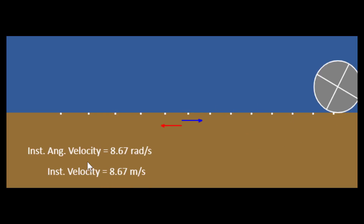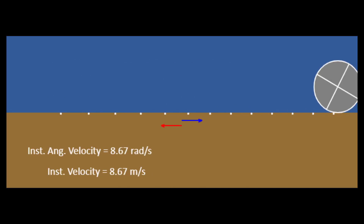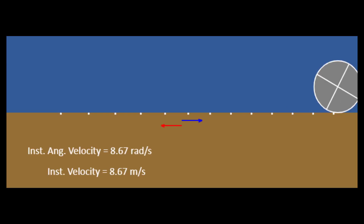Eventually you get this condition: the angular velocity and linear velocity are numerically equal. The blue vector represents the translational velocity of the bottommost point of the object, and the red vector represents the linear velocity due to rotation of the bottommost point. When they are equal, the velocity of the bottommost point is zero and the body is rolling without slipping. Friction acts against motion — that is, to the left — and then causes it to roll without slipping.